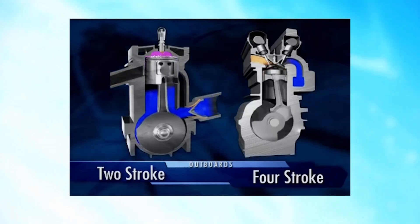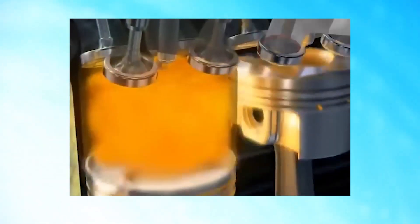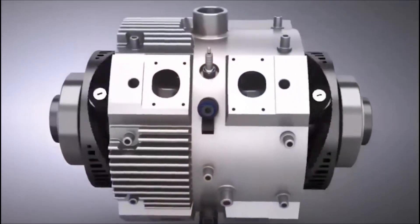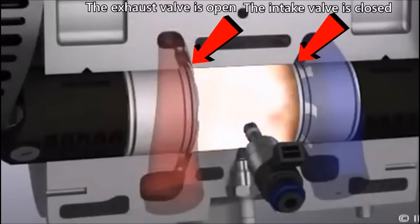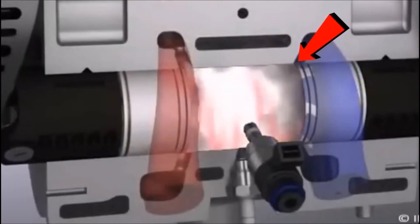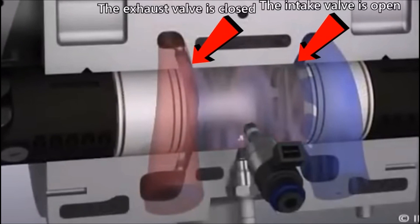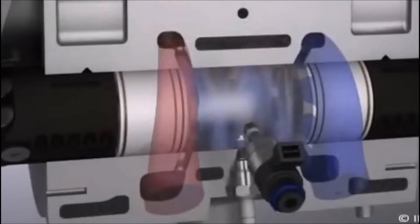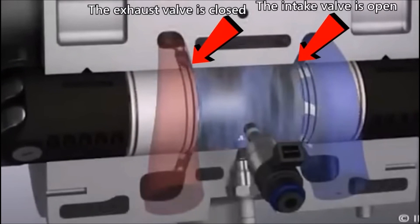In contrast to orbital two-strokes and other engines that employ conventional poppet valves, the engine we're discussing continues to utilize cylinder ports located near the bottom of each piston's stroke. This design characteristic poses a challenge in terms of the limited time available for the exhaust gases from the previous combustion cycle to exit the cylinder and for a fresh intake charge to enter.